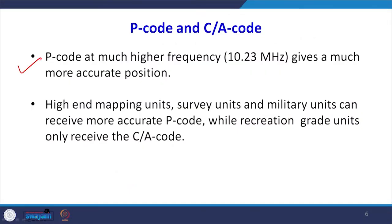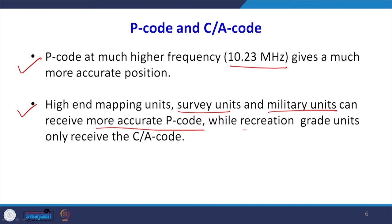Broadly, we have to understand P code and CA code. The P code is working at a much higher frequency of 10.23 megahertz, giving very precise results. High-end mapping units, surveying units, or military units can receive the more accurate P code for very accurate data. Recreational-type units, which are less expensive, only receive data in course acquisition code, so relative positions would be good but absolute position may not be as accurate.